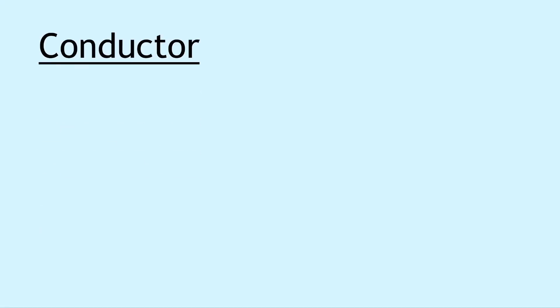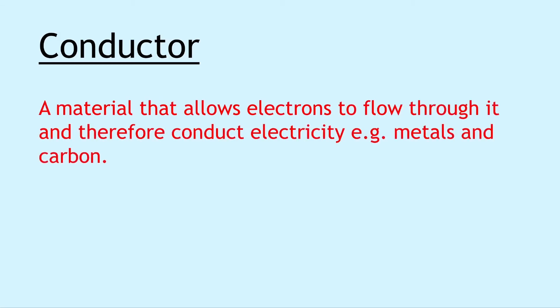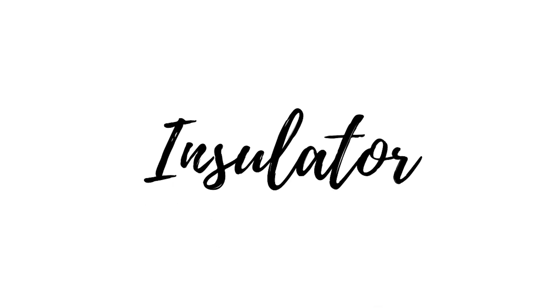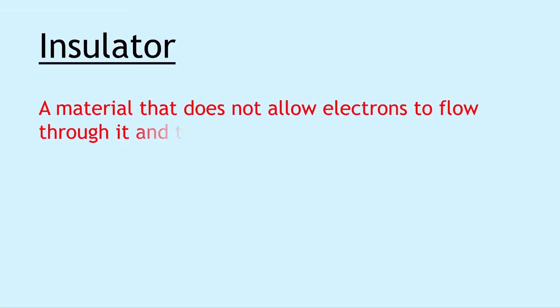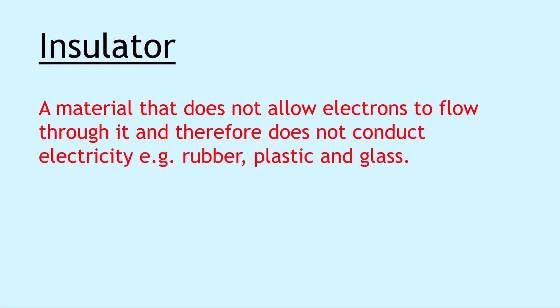Our next definition is for a conductor, and this is a material that allows electrons to flow through it and therefore conduct electricity — for example metals and carbon. Next we have an insulator, and this is a material that does not allow electrons to flow through it and therefore does not conduct electricity — for example rubber, plastic and glass.